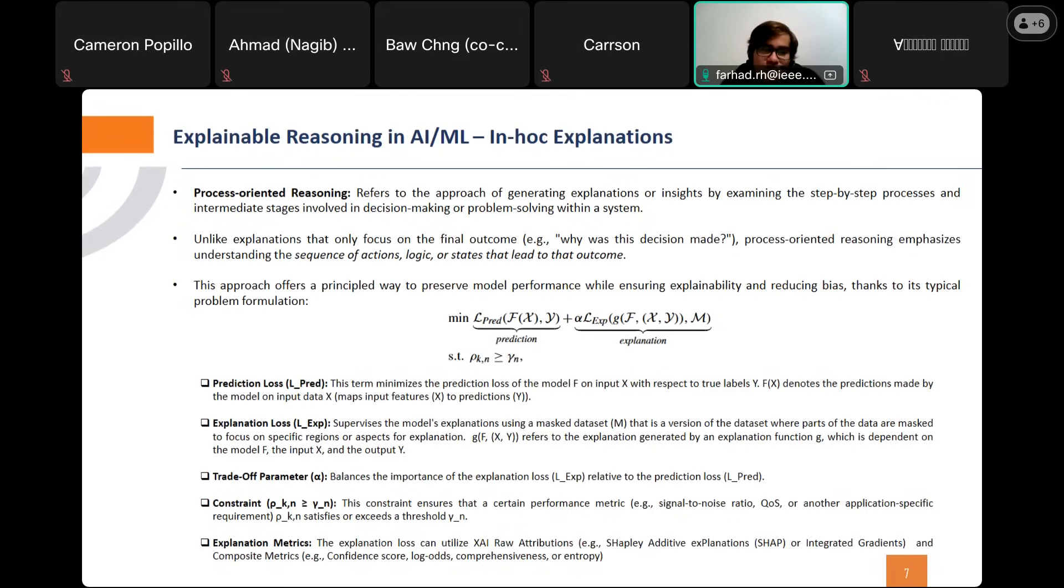We have the alpha as a trade-off parameter that balances the importance of explanation loss relative to the prediction loss.